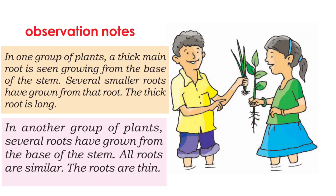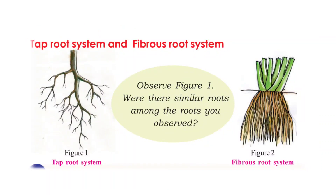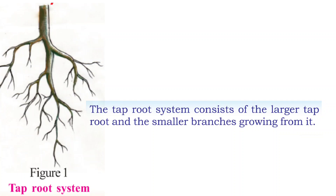We can now look at the two different types of roots. The first one is the taproot and the second one is the fibrous root. The taproot system consists of a large, long taproot with smaller branches or smaller roots growing from this large taproot.